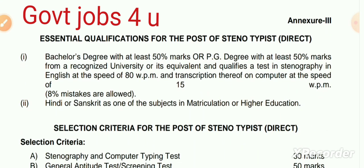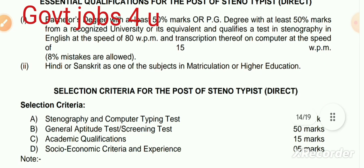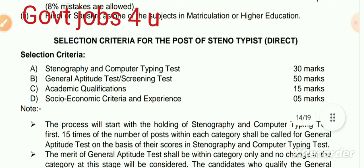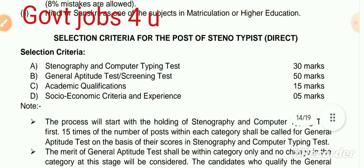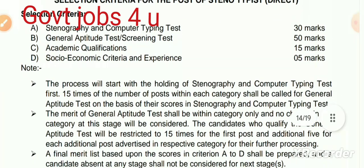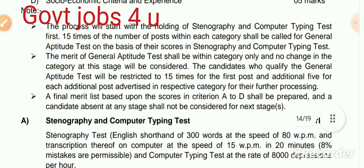It is a Bachelor's degree requirement. Typing speed of 80 words per minute is required — this is a high school class level requirement. General aptitude test carries 50 marks, academic qualification carries 15 marks, and social economics and experience carries 5 marks.